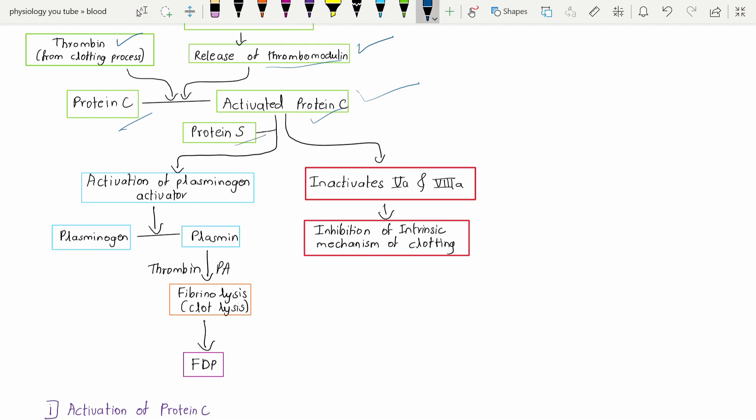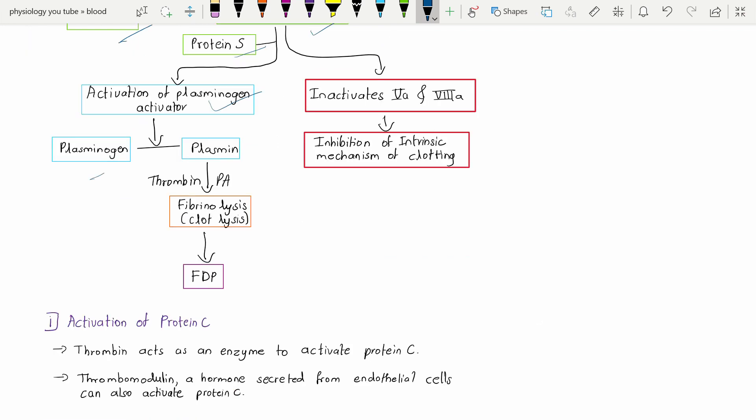The activated protein C activates the plasminogen activators. These plasminogen activators will convert the plasminogen to the plasmin. Plasminogen is converted to plasmin with the help of thrombin and the plasminogen activator, and it is going to lyse our clot, that is, it is going to degrade the fibrin.